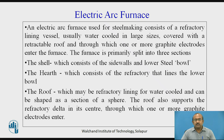An electric arc furnace used for steel making consists of a refractory lining vessel, usually water cooled in large sizes, covered with a retractable roof through which one or more graphite electrodes enter. The furnace is primarily split into three sections: the shell, which consists of side walls and lower steel bowl; the hearth, which consists of refractory lining of the lower bowl; and the roof, which may be refractory lined or water cooled and shaped as a section of a sphere.